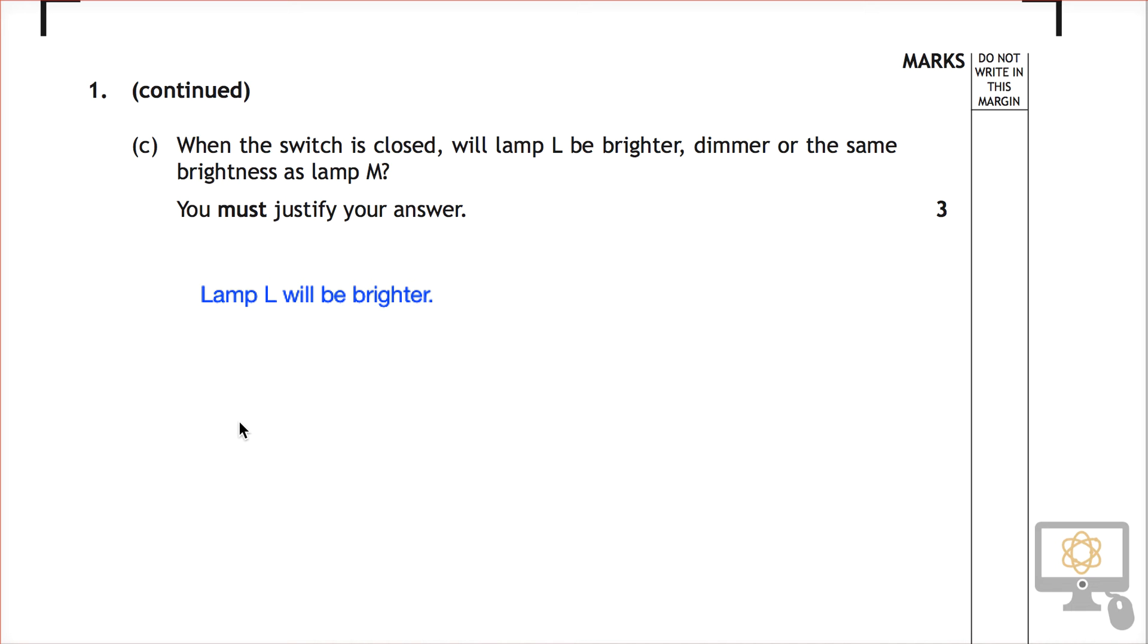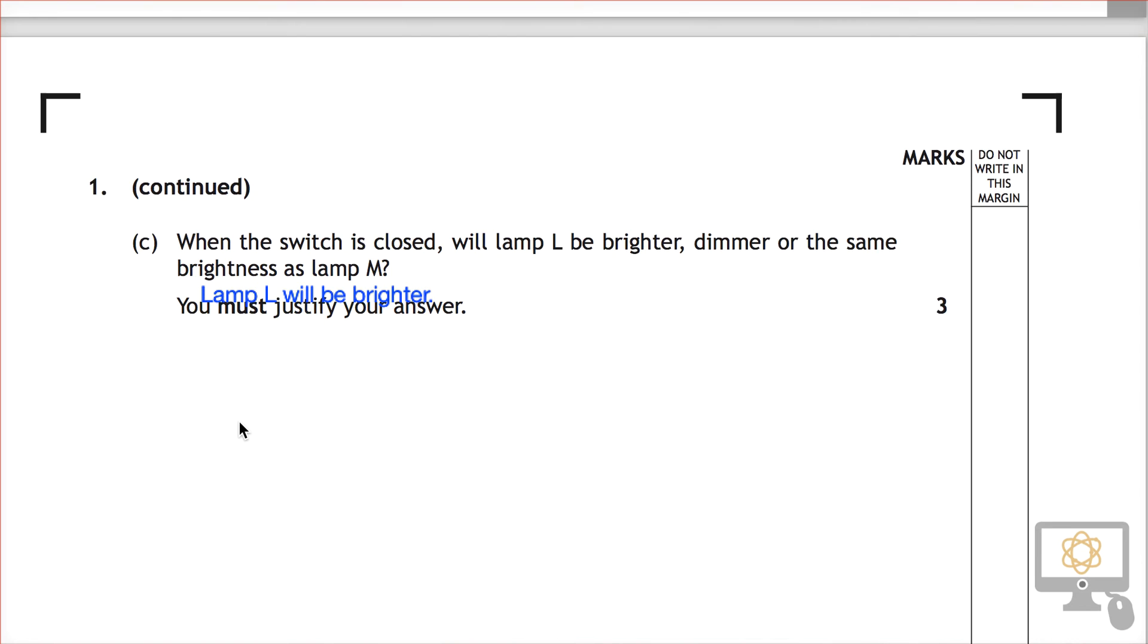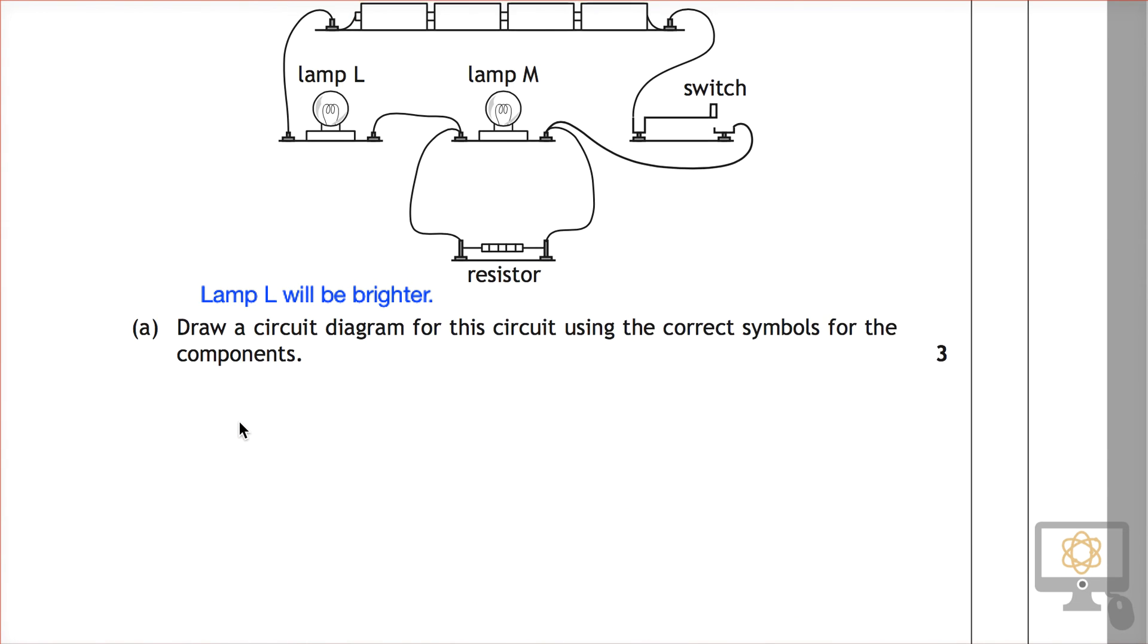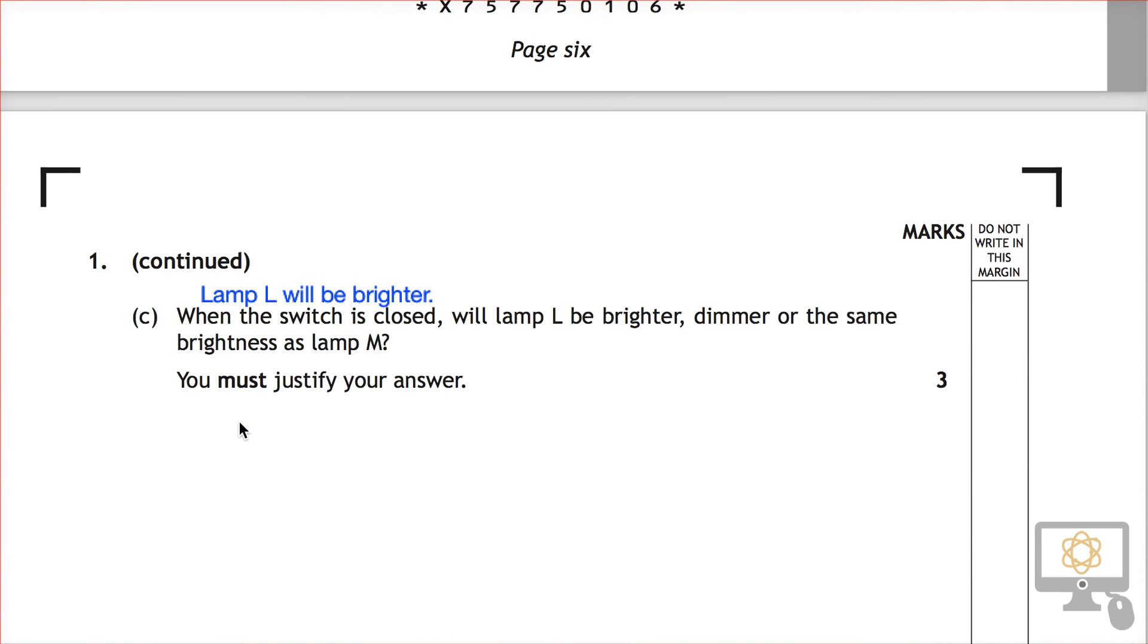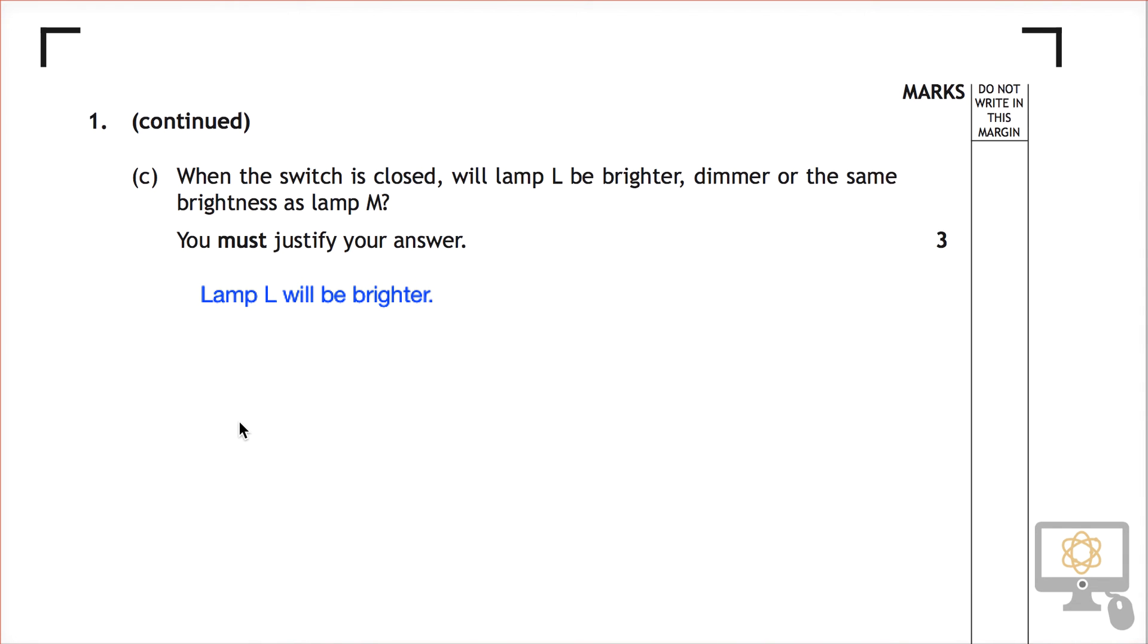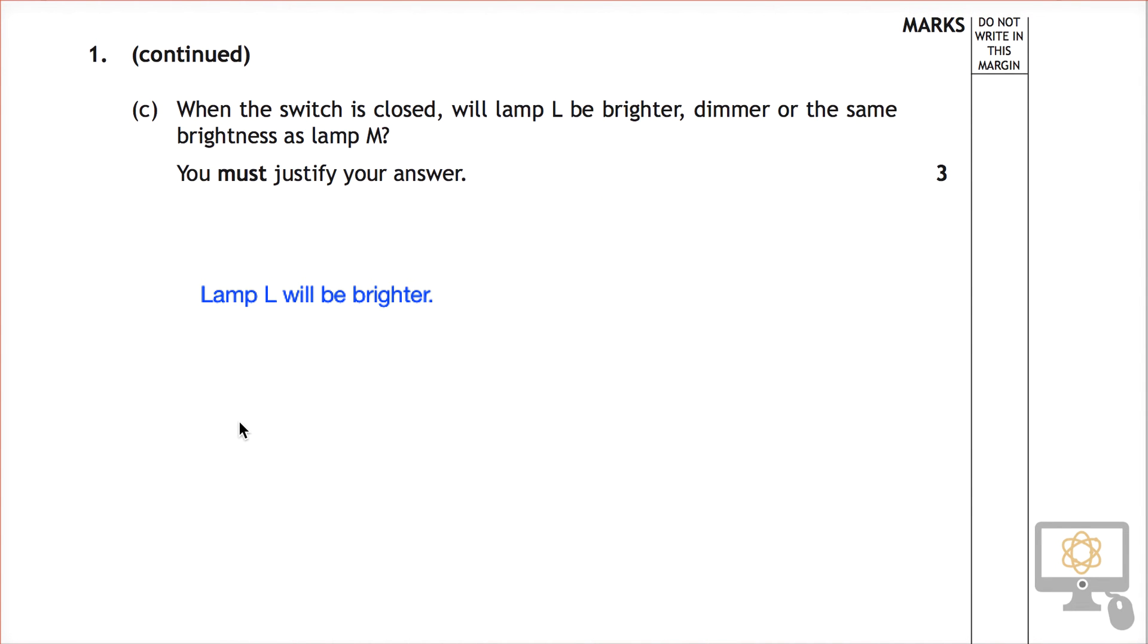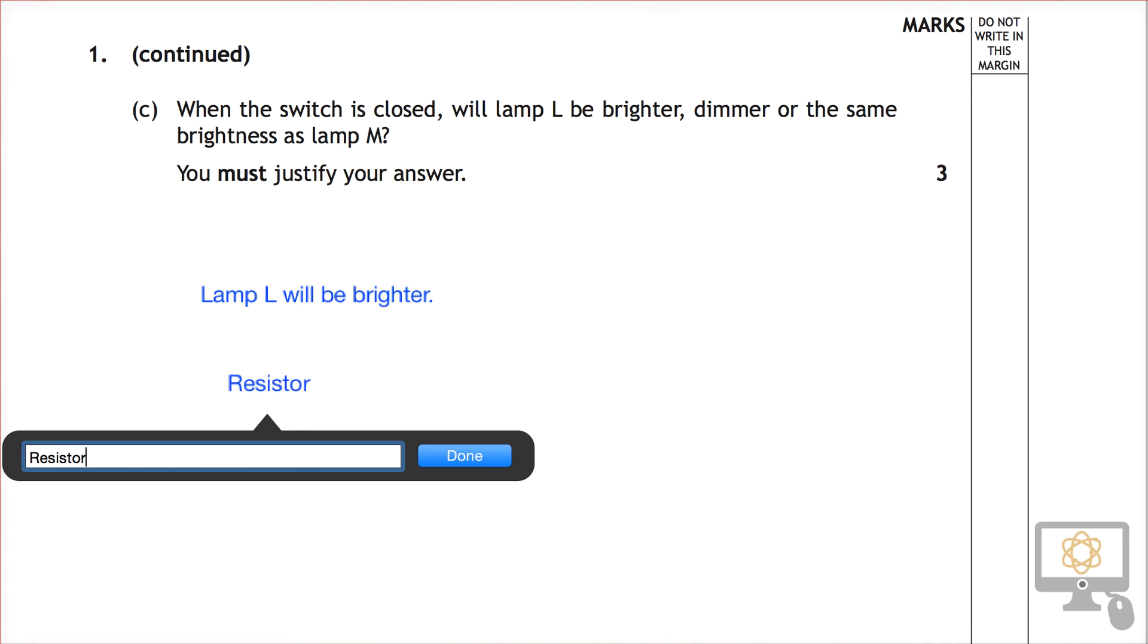Okay, so then the question is, why is that? Why is lamp L brighter? So let's go back up. I've got this still up on the screen. Lamp L is brighter. Well, let's have a look at the resistor. It's in parallel with lamp M. So that's really the next thing that we need to say. The resistor is in parallel with lamp M. So we'll write that in as well. Resistor is in parallel with lamp M.